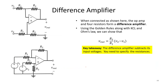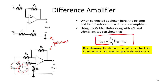The difference amplifier subtracts its input voltages. Applying Kirchhoff's laws and the golden rules gives V_out = (R2/R1)·(V2 - V1). If you want to perform subtraction, use a difference amplifier and specify the resistances for the desired behavior.